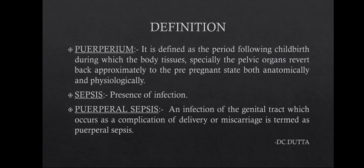Puerperium is the period which occurs after childbirth, during which tissues such as the pelvic organs and uterus revert back — meaning they return to their normal pre-pregnant state, both anatomically and physiologically, that is structurally and functionally. As we know, when a woman conceives, there are many structural and functional changes in the body, with maximum changes seen in the uterus.